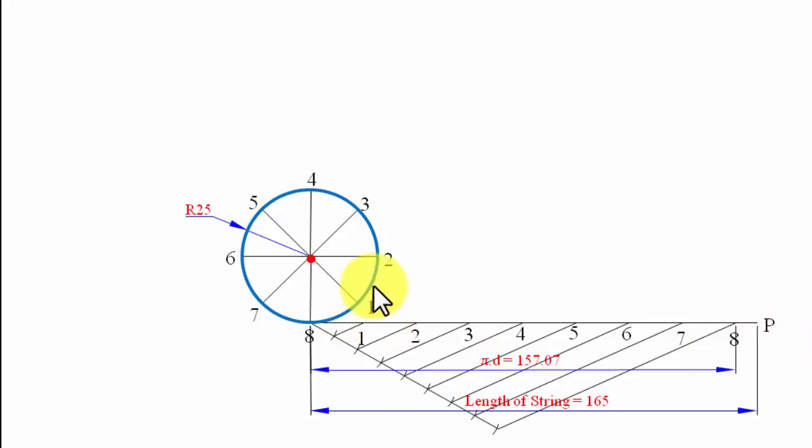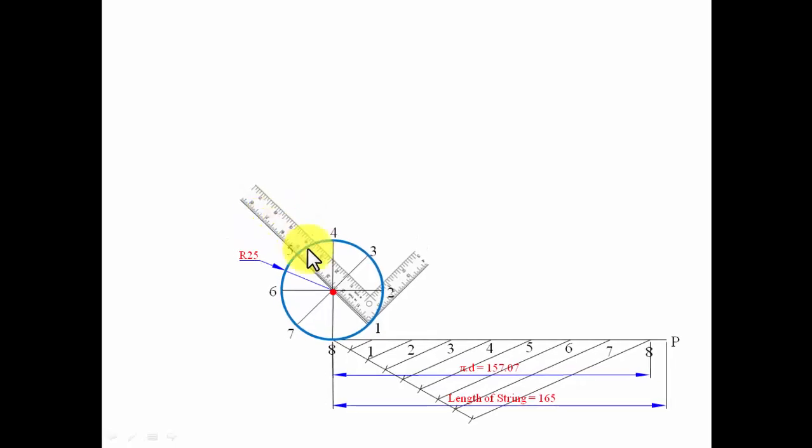Moving ahead, the next thing to do is to draw tangents from point one, from two, three, four, from all the points. Let me show you how this can be done. Keep one scale of your mini drafter over here so that the other scale is absolutely perpendicular to this spoke, and now draw a line of any suitable length.